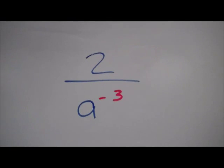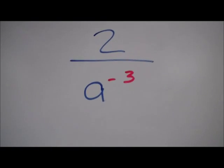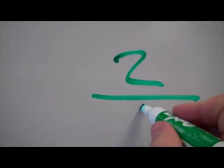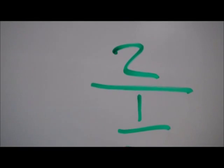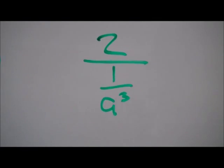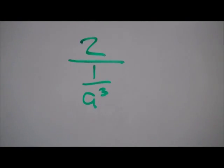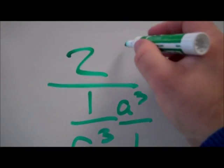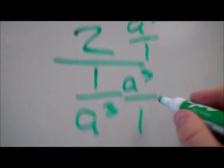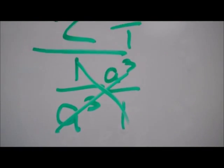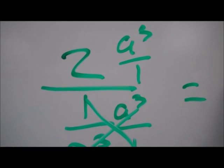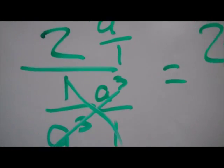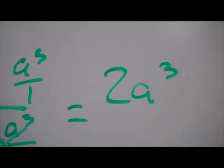Here I have 2 divided by a to the negative 3 — that's 2 over 1 over a to the third. But I can't have that fraction in my denominator, so I'm going to multiply by a to the third over 1. These cancel out to a 1. 2 times a to the third gives me 2a to the third over 1, which is simply 2a to the third.